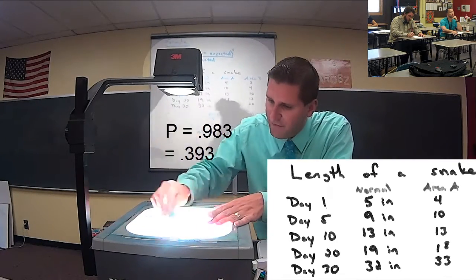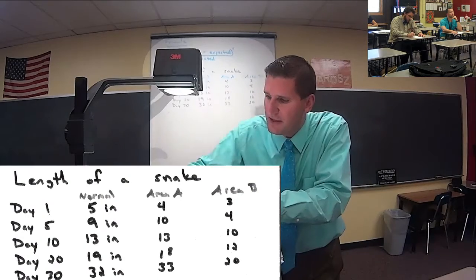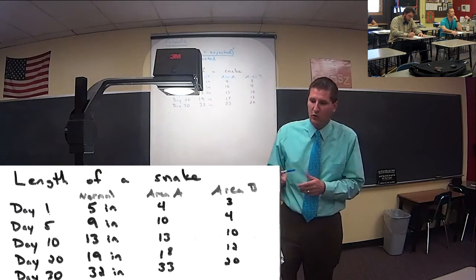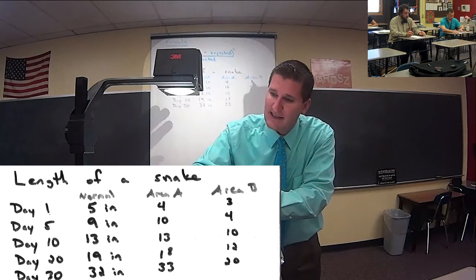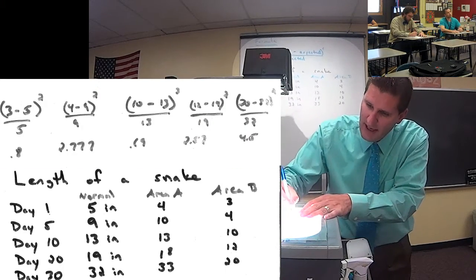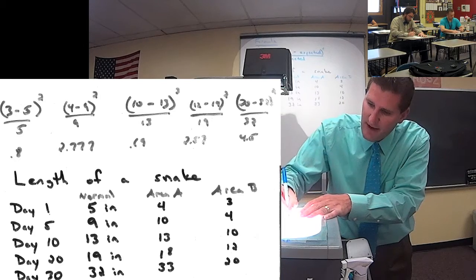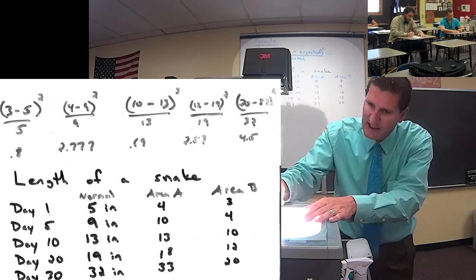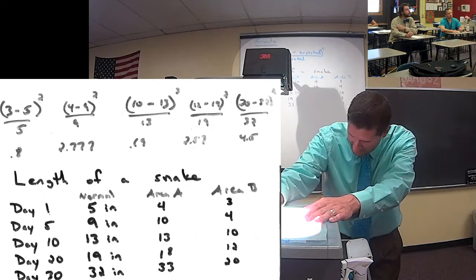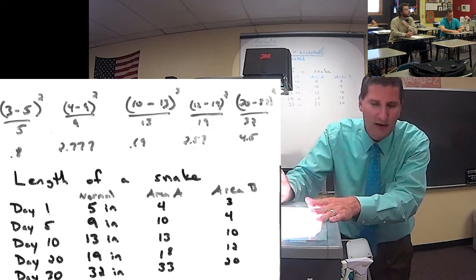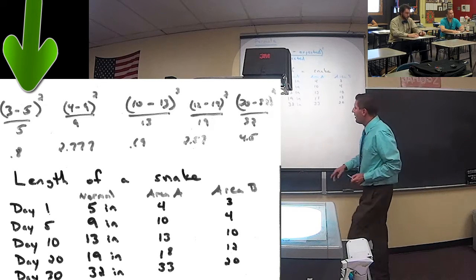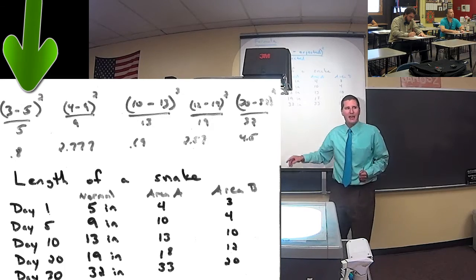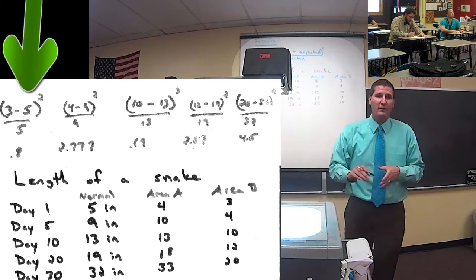Now let's go to Farmer Frank and do the same process a little quicker. Farmer Frank's snake was 3 minus the expected value of 5, which is negative 2. 2 squared is 4, divided by the expected size of 5 inches, gives us 0.8. Notice already, just one value of Farmer Frank's is already higher than the sum total of Farmer Joe's.